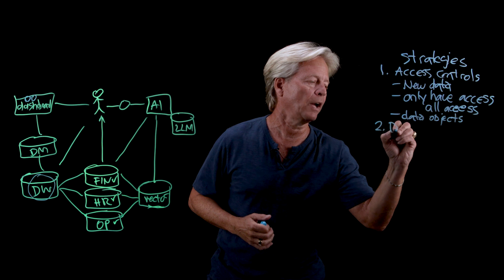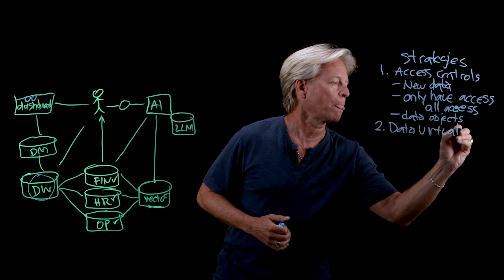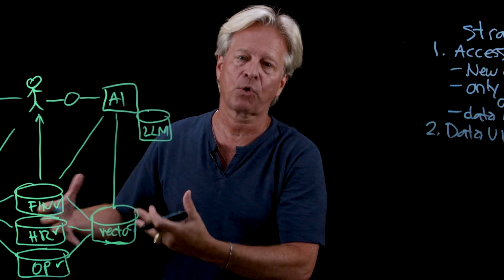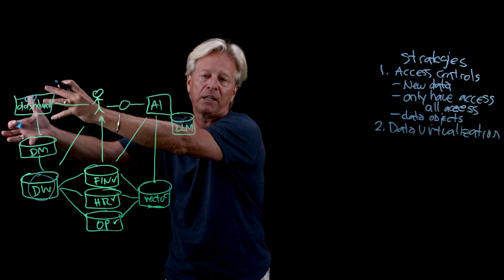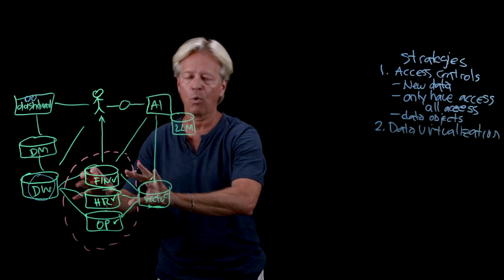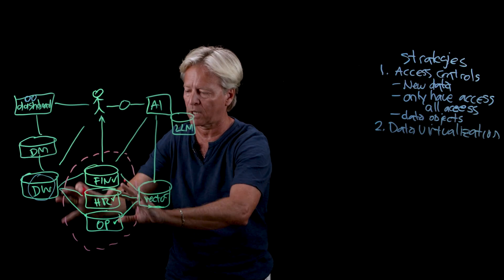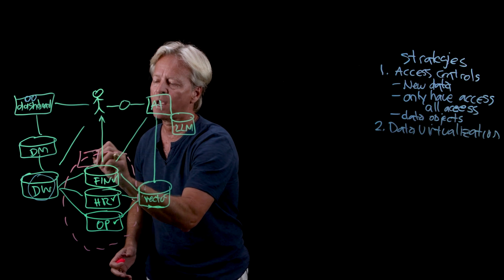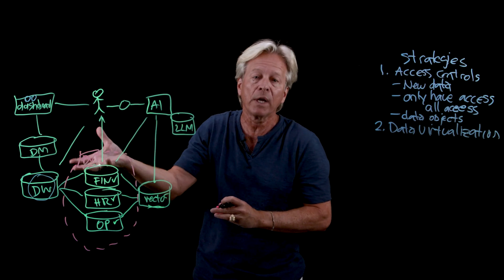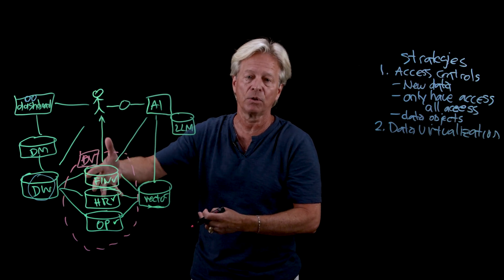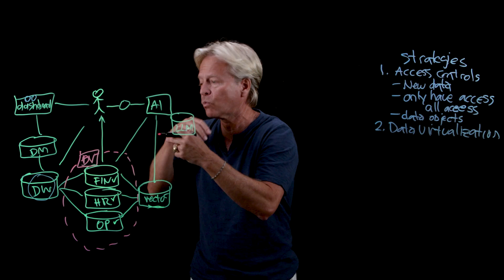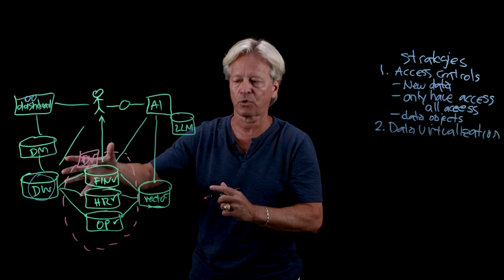The next strategy is data virtualization. In our traditional approach, we do a lot of extract, transform, load — moving and shaping data to get the output we need. With the emergence of data lakes, which take a broad collection view of enterprise data, we can create a data virtualization layer. Instead of always doing ETLs and moving data, every time we want to do a query, we can create a virtualized output that's specific to what that user has access and controls to. That virtualization is a runtime control and view of what they're allowed to see, which gives us a much better ability to control access.